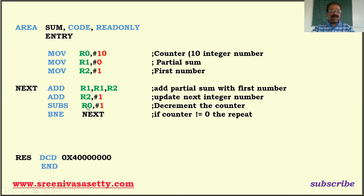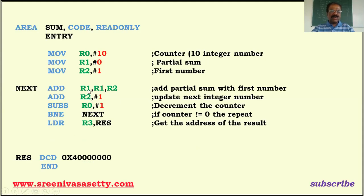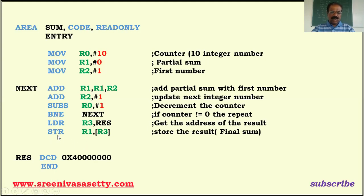BNE — branch if not equal. The value of R0 is 9, which is not equal to zero, so we go back to the loop. R1 now holds the previous sum of 1. Next iteration: 1 plus 2 equals 3, which goes to R1; then R2 increments to 3; then we decrement the counter again. This continues — not equal to zero, go back — executing 1 plus 2 plus 3 plus 4 and so on, until R0 equals zero. Once R0 becomes zero, it exits the loop. I then load the address of the result memory location into R3.